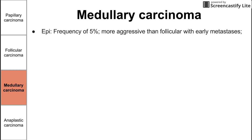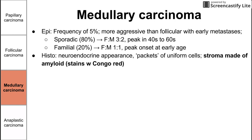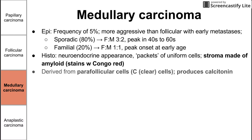Next is medullary carcinoma — more aggressive and spreading early. Frequency is about 5%. Sporadic cases account for about 80%, are more common in females, and peak in the 40s to 60s. Familial medullary carcinoma has an even male-to-female ratio and peaks much earlier, sometimes in children. On histology, we see a neuroendocrine appearance with packets of uniform cells. Critically, the stroma is made of amyloid, stainable with Congo red — cancerous cells lying over a bed of amyloid is classic for medullary carcinoma.